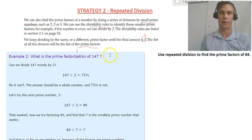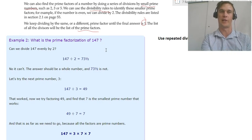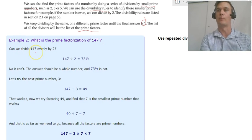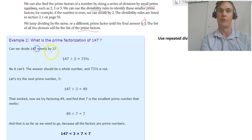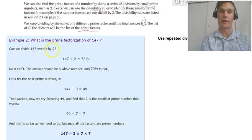So here's an example. We're going to find the prime factors of 147. So first we're going to start off with the smallest prime factor which is 2. Can we divide 147 by 2? We know that we can't because it's an odd number, so we can't use 2 as a prime factor. So we move on to the next one.